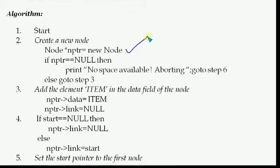What happens when we write this line: if memory is available, a new node will get memory allocated. After creating the new node denoted by nptr, we first check whether memory was available — if nptr remains null, meaning memory allocation failed, then print 'no space available' and abort, go to step 6.